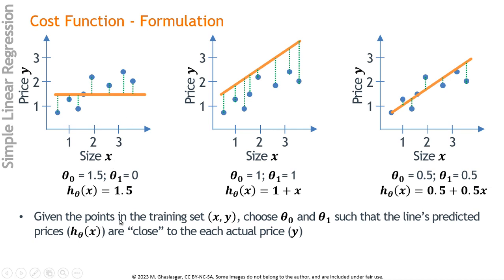Given the points in the training set, we want to choose theta_0 and theta_1 such that the line's predicted prices are close to the actual prices. The predicted prices are H(theta), the actual prices are Y, and the difference between them is represented by the dotted line.